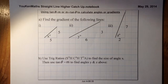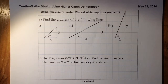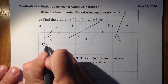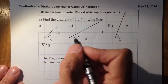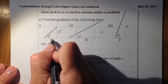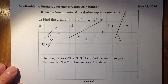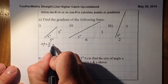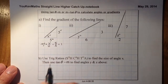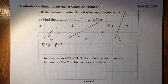Let's look at a couple of simple things here. The first thing I'm going to look at is the gradient of the first line. I'm going to use the simple formula: vertical over horizontal. What I can see is the vertical divided by the horizontal gives me 5 divided by 5, and that's simply a gradient of 1.